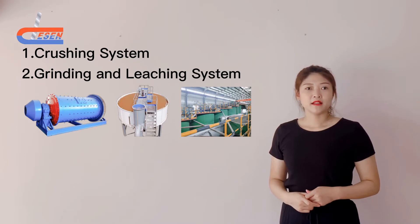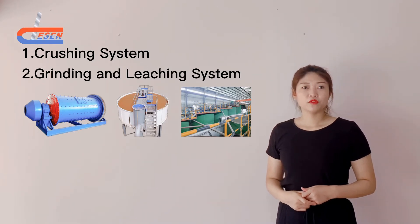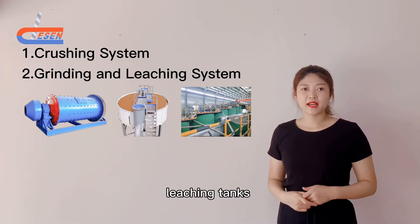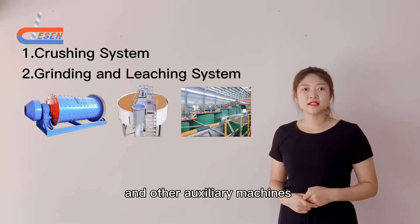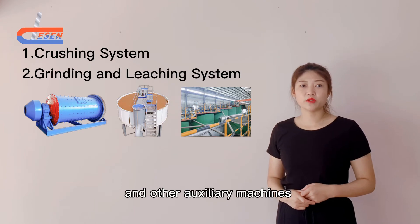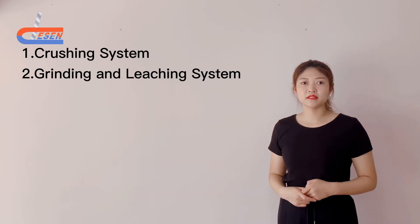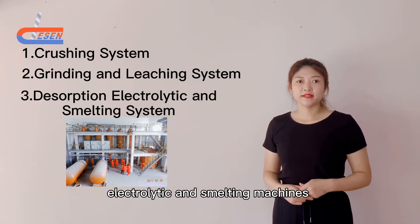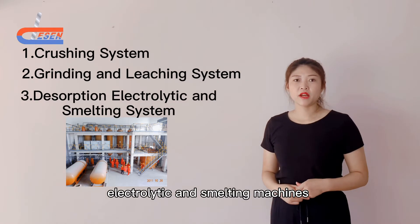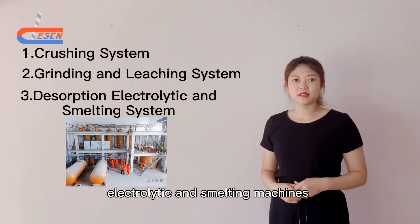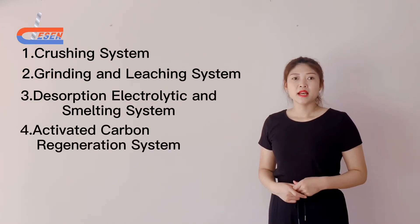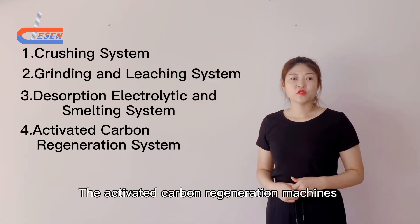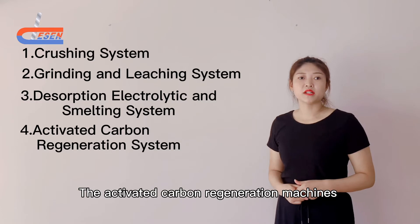There are ball mills, thickeners, leaching tanks, and other auxiliary machines. Then comes the desorption, electrolytic, and smelting machines, as well as the activated carbon regeneration machines.